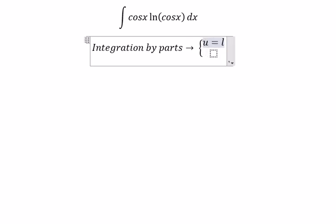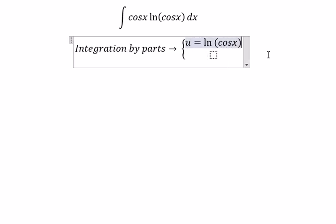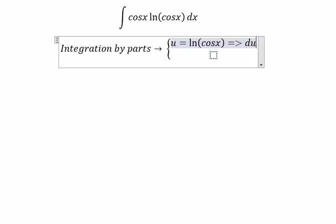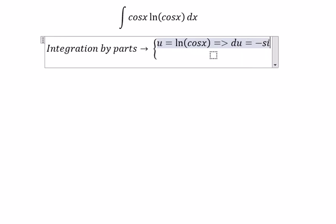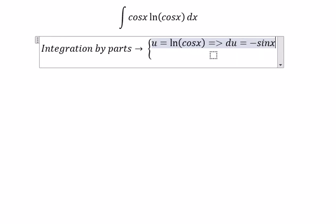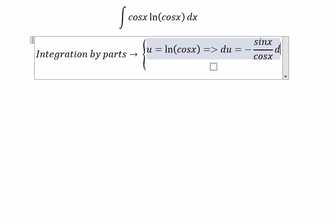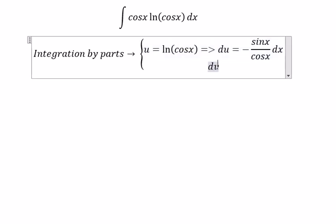u equals to ln of cos s, du equals to negative sine s over cos s ds, dv we got cos s ds.